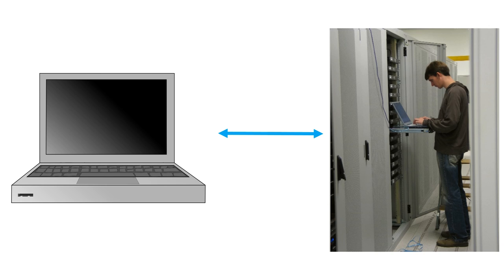When you send an email, you are telling your computer to send a message to be stored on a mail server. When you read your own email, you're asking your computer to access messages that have been stored for you on a server. When you view a web page, you're using your computer to display a web document that somebody else uploaded to a web server. When you download media files from Internet stores like iTunes, Amazon, or Google Play, information is copied from a server to your computer.